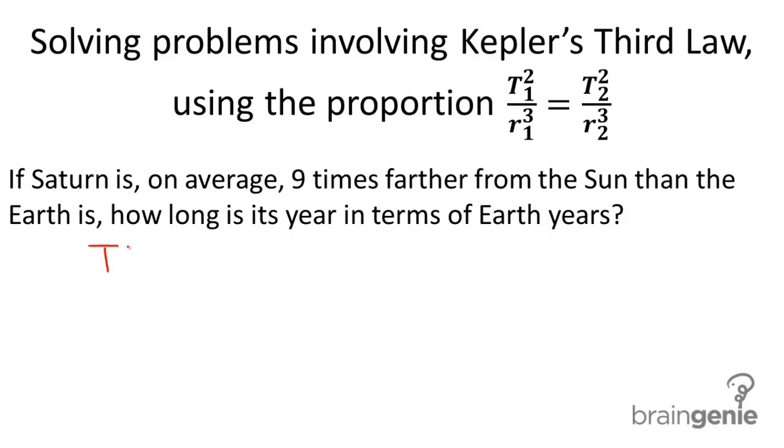Kepler's third law states that the proportion of period squared over the distance from the star cubed is the same for all planets. This would equal the same ratio for that of another planet orbiting the same star.